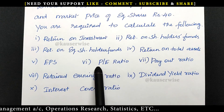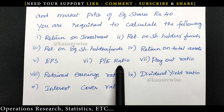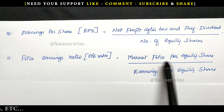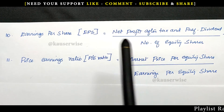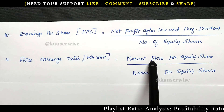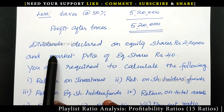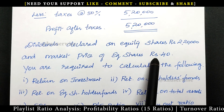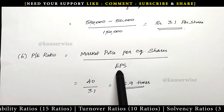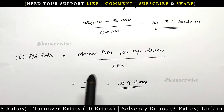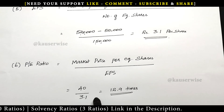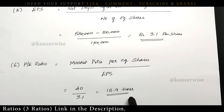The next one is PE ratio — PE stands for price earning ratio. The formula is market price per equity share divided by earning per equity share. In the adjustment, market price of equity shares is given as rupees 40. So price earning ratio equals 40 rupees divided by EPS of 3.1, giving 12.9 times. This is the price earning ratio.